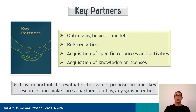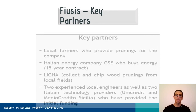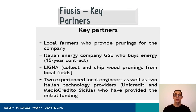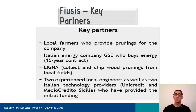Otherwise, a company must end a partnership quickly to avoid further wastage of resources. Back to the case — the company's key partners are: local farmers who provide prunings; the Italian energy company GSE who buys the energy; Ligna, the company that collects wood prunings from local fields; and finally, two experienced local engineers as well as two Italian technology providers as the company's first partners.